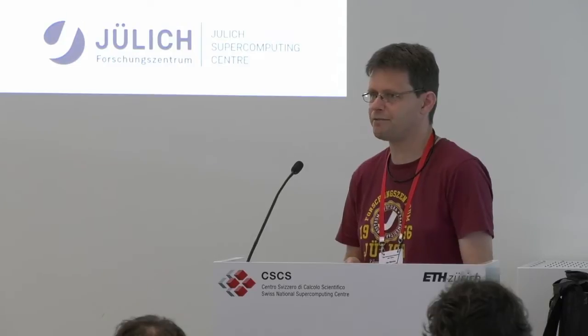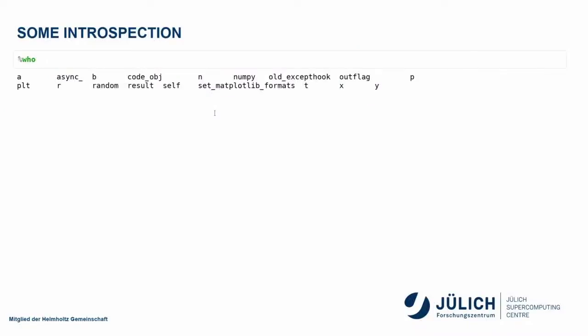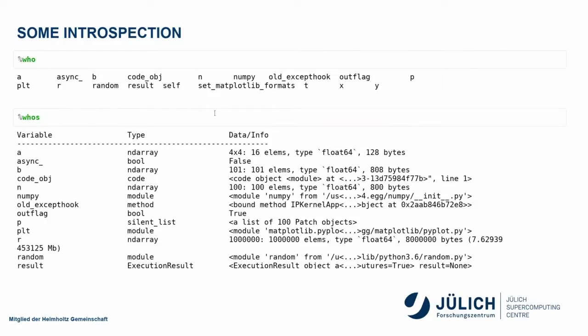To see what you have in your namespace, you can use 'who'. You'll see your variables but also things like matplotlib pyplot imported as PLT, random, and some that you didn't explicitly put in. If you want more information about these variables, you can use 'whos' — without an E at the end — and it will, for each variable, tell you what it is, the size it takes, how much space it takes up in memory, and what type it is.